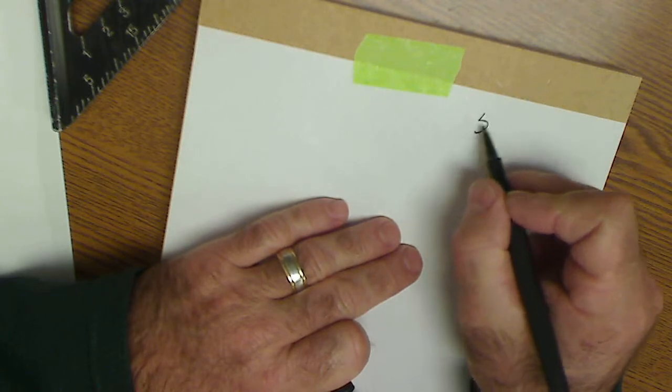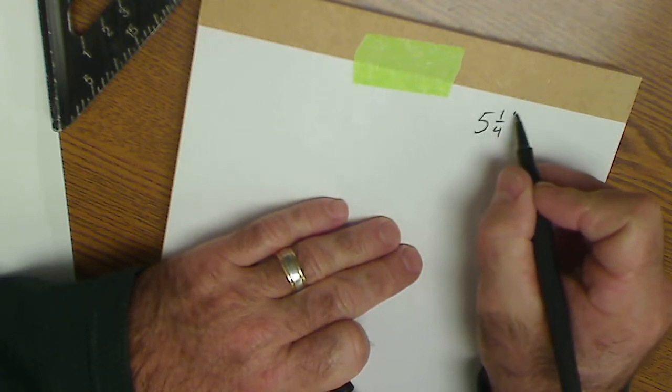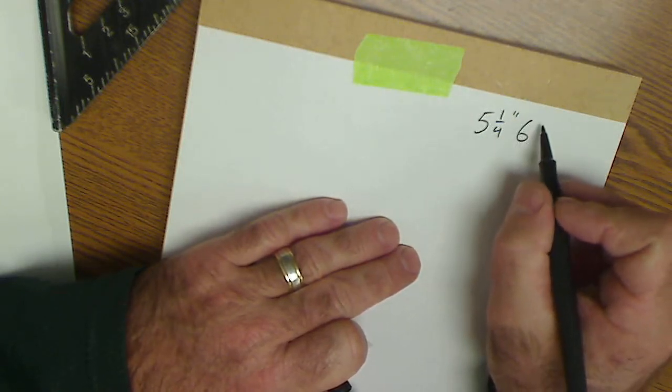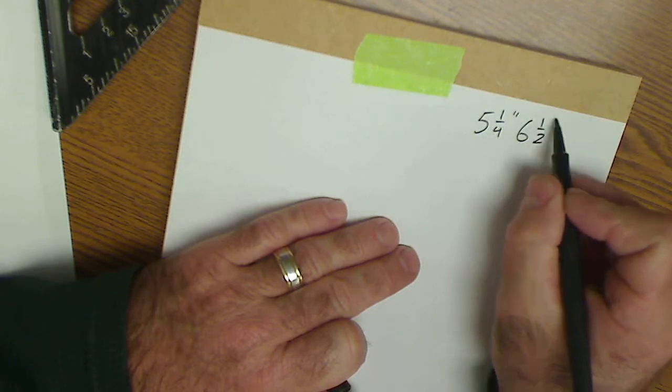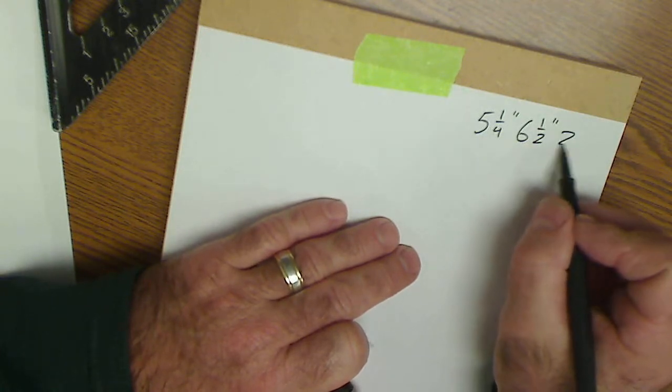Once that sheet of paper is taped down to that board, I just give them some measurements. Draw two lines: one that's 5 1/4 inch long, one that's 6 1/2 inch long, and create an angle of 23 degrees in between those two lines.